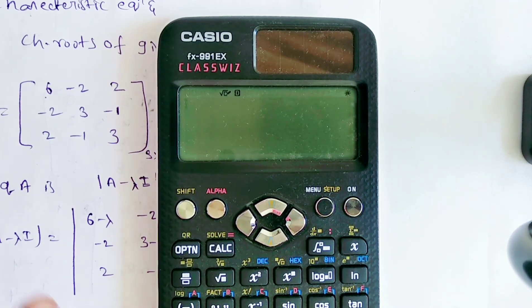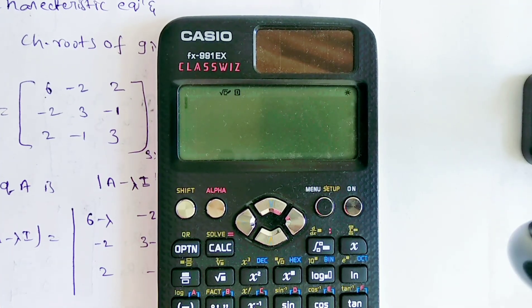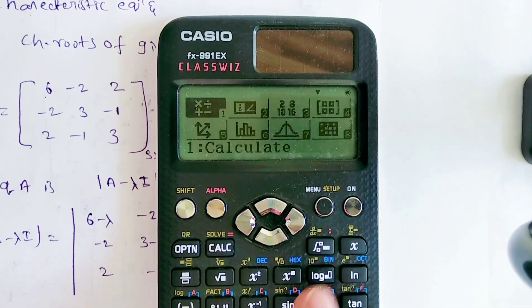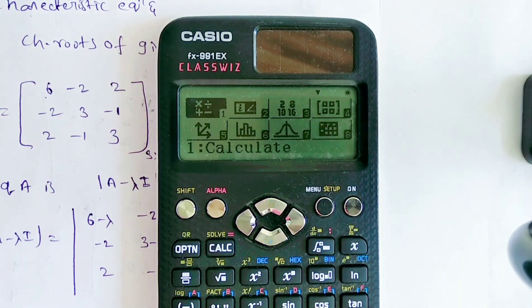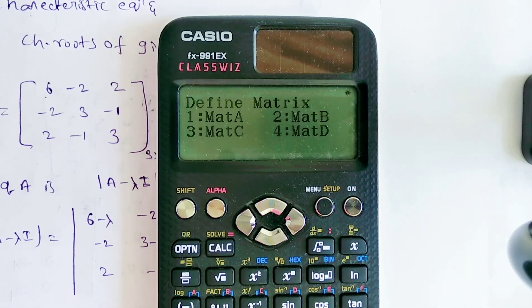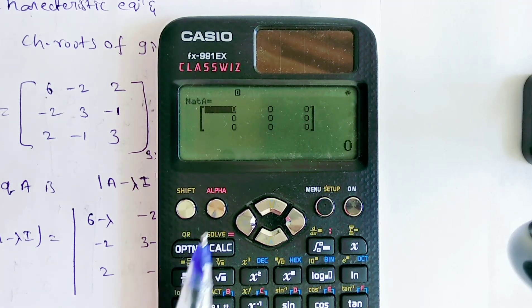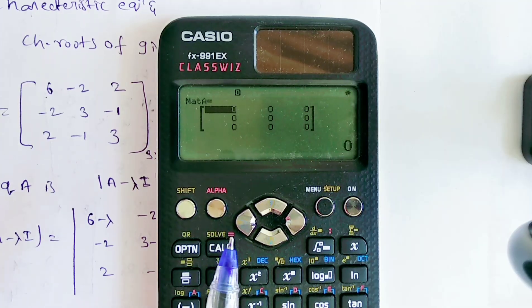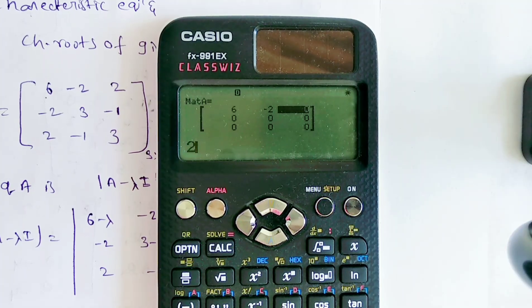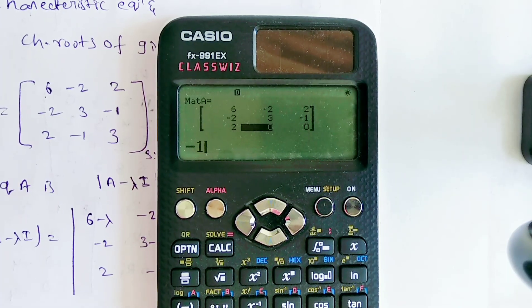The given matrix is A. First, in the calculator, write matrix A: press menu, go to matrix, press 4. Define the matrix as mat A by pressing 1. The order is 3×3, so press 3 for rows and 3 for columns. Now edit the matrix: enter 6, -2, 2, -2, 3, -1, 2, -1, 3.